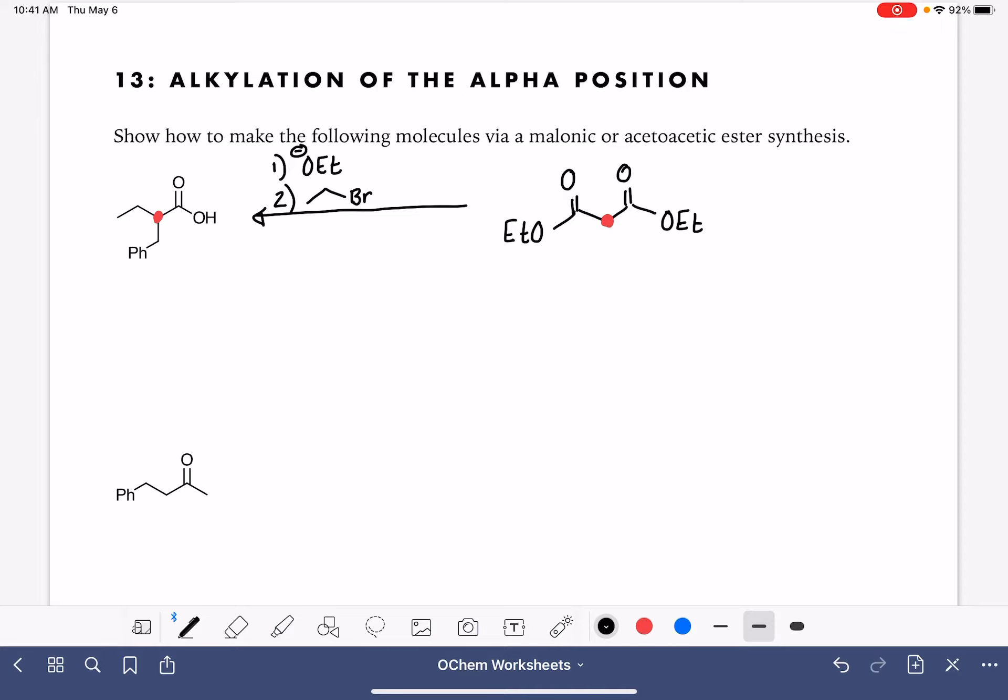Then if you want to add a second alkyl group, you're going to repeat this. So we're going to do ethoxide round two. That's going to deprotonate again, because remember there are two hydrogens here in this position. And then step four is going to be to add the second alkyl group. This is PhCH2Br.